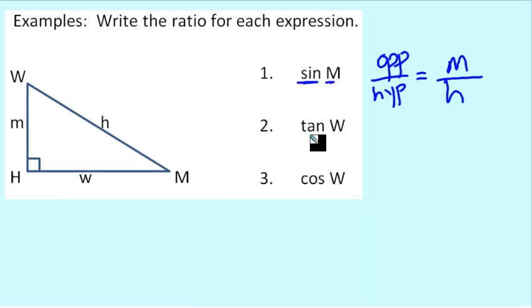The tangent of angle W. Well, angle W is up here. Tangent is opposite over adjacent. That's the TOA part of SOH-CAH-TOA. The side opposite angle W is the side not involved in forming angle W, which is side lowercase w. The adjacent side is either M or H side. And since H is the hypotenuse, M gets to be the adjacent side.